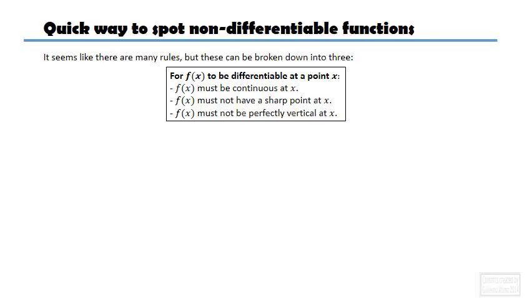So, a quick way to spot non-differentiable functions, because it seems that we've gone through a lot of rules. Broken down into 3, these are the rules: f(x) must be continuous at x, must not have a sharp point at x, must not be perfectly vertical at x.